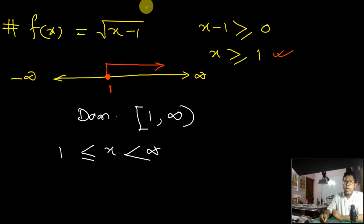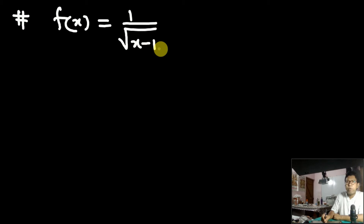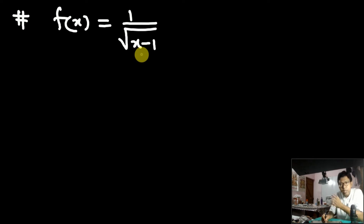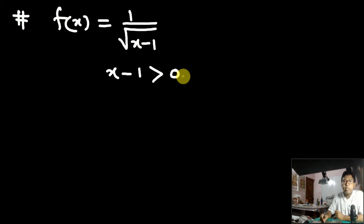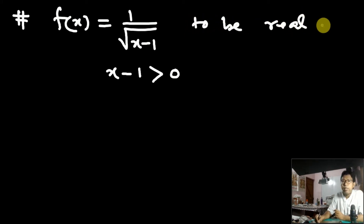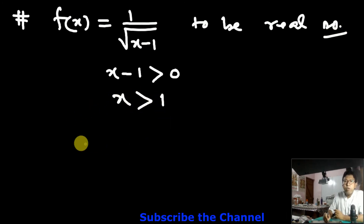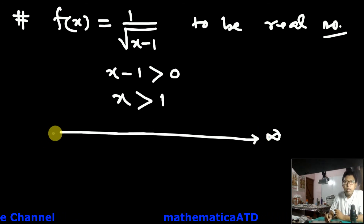Next, I want to show another function: f(x) = 1/√(x−1). As I said earlier, when you have a root expression in the denominator, that expression must be greater than 0 — you cannot put equal to 0 — because if x−1 = 0, then 1/0 is indeterminate. For this you must write x−1 > 0 for f(x) to be a real number, so x > 1.